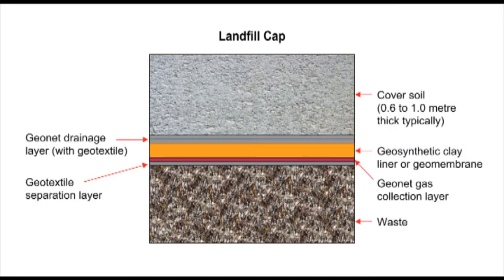When the landfill is full, a geotextile layer is rolled out over the top. This separates the waste below from the sealing cap above. The sealing properties are provided by a geosynthetic clay liner or geomembrane. Below the seal is a gas collection layer, and above it a water collection layer — a drainage layer. Soil is then used to cover the whole system and promote vegetation.